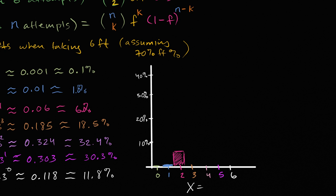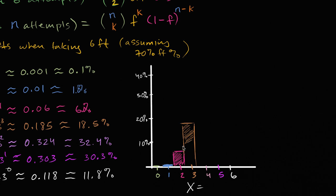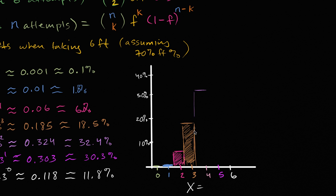X equaling three, 18 and a half percent chance of that happening. So 18 and a half gets us right about there — it's a hand-drawn histogram, so you have to bear with me. And then four was 32.4 percent, so that is up here. 32.4 percent, looks like that, let me shade that in.